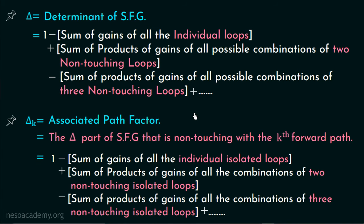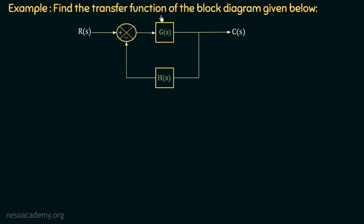Let us take an example to understand how to apply Mason's gain formula to calculate the overall transfer function. We are given a closed loop system and need to find its overall transfer function. This is a negative feedback system, and we already know the transfer function is G(s) over 1 plus G(s)H(s). Let us verify this by converting the block diagram into an SFG and then applying Mason's gain formula.